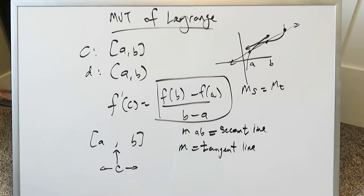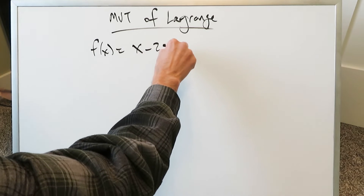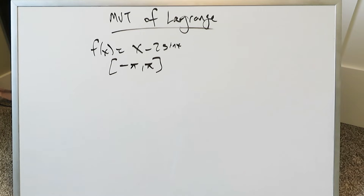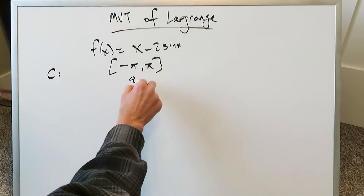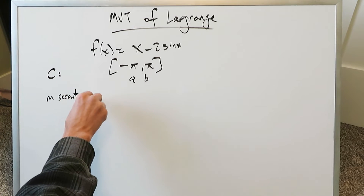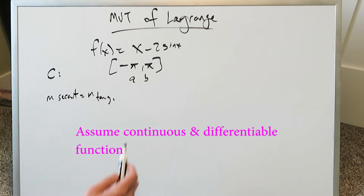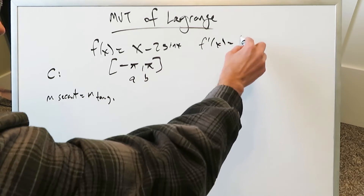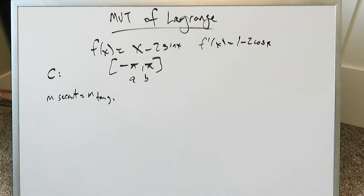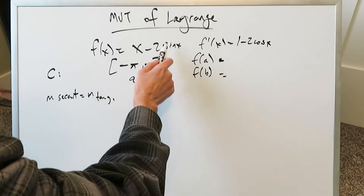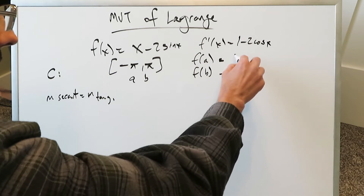Let a certain function be f(x) = x - 2sin(x), with a closed interval [-π, 2π]. Within this interval for this given function, is there a certain value c such that it is an element of (a, b) and has the property that the slope of the secant equals the slope of the tangent at that specific point? The first thing you want to do is find the derivative: the derivative of x - 2sin(x) is 1 - 2cos(x). Then find f(a): putting -π into the function gives -π - 0, which is just -π.